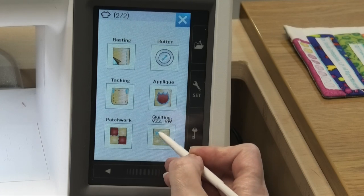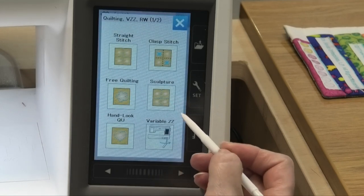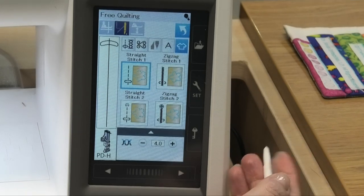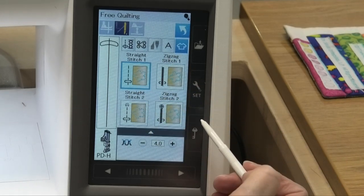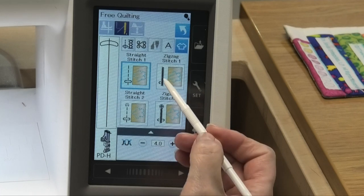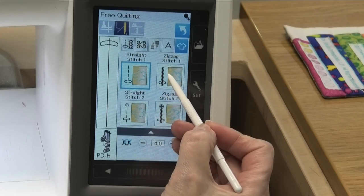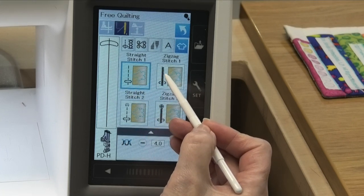So you're going to click that icon and the first thing you want to look at is free quilting or free motion quilting. And you can see there's a whole bunch of choices in here as well. So let me walk you through these. Typically you're going to use your straight stitch one or zigzag stitch one. That's for most quilt sandwiches you have.